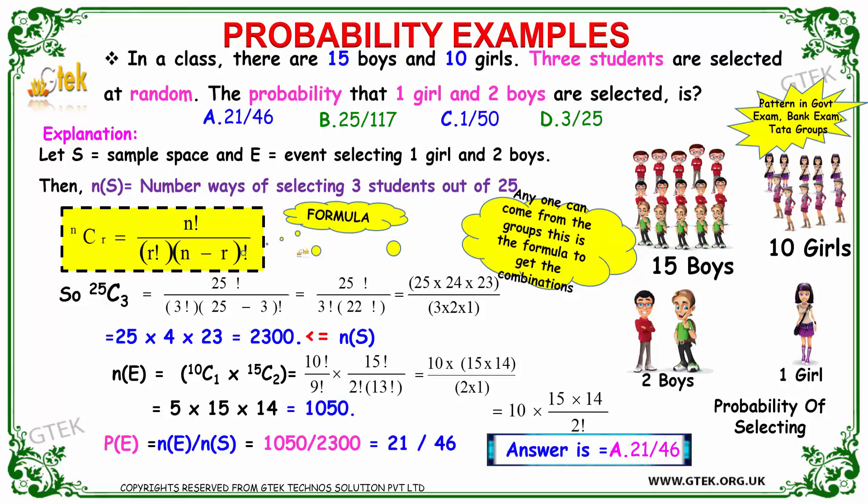As indicated, the sample space is nCr equals n factorial divided by r factorial and n minus r factorial. Anyone is the possibility, that's why we got this formula to be implemented. As I told, the 25C3 which will have 25 factorial.